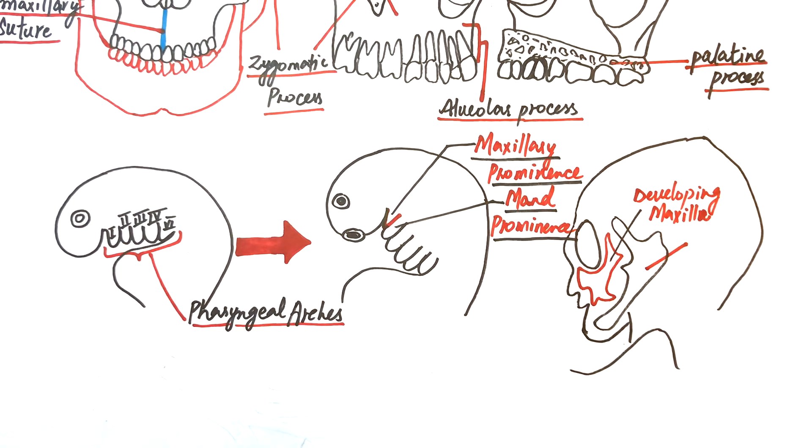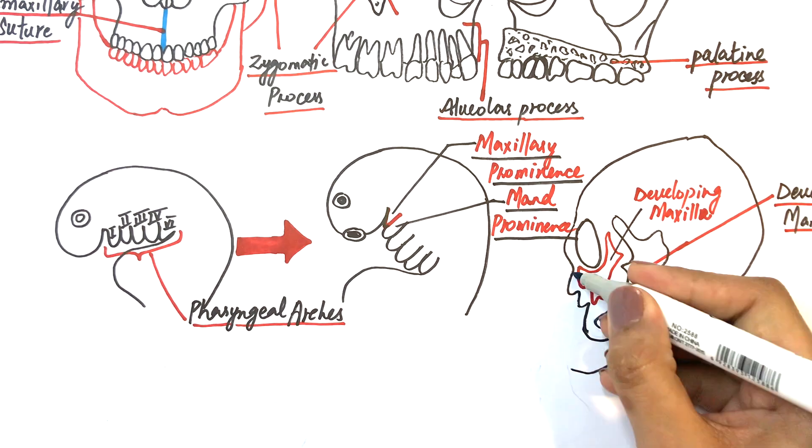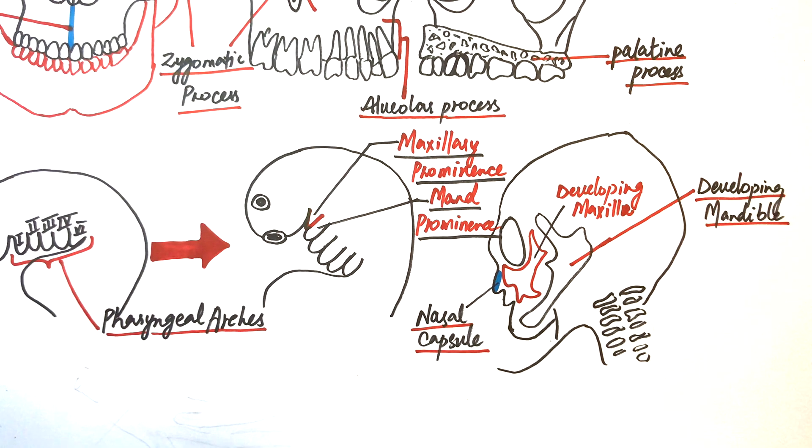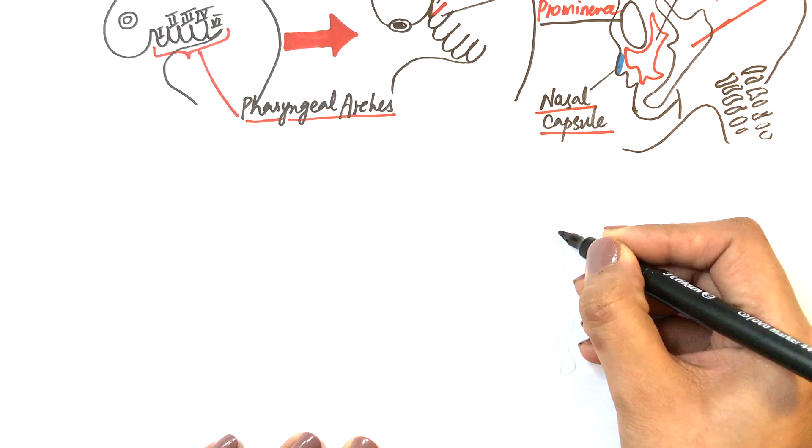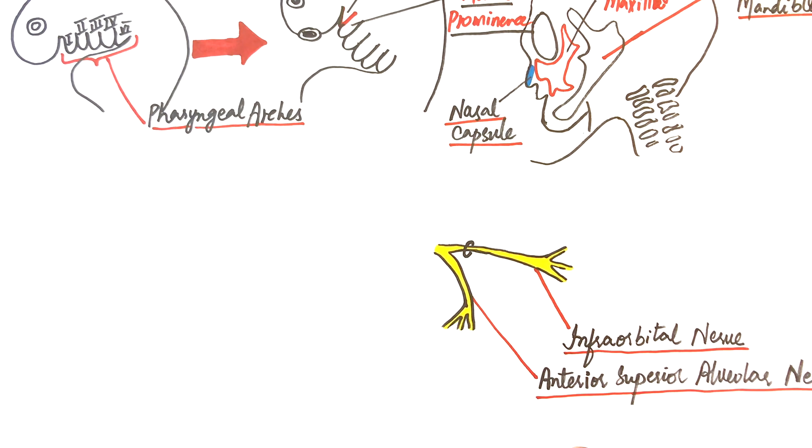The center of ossification from which the bone formation begins actually has a close association with the cartilage of the nasal capsule. The center of ossification appears in the angle between the infraorbital and the anterior superior alveolar nerves.